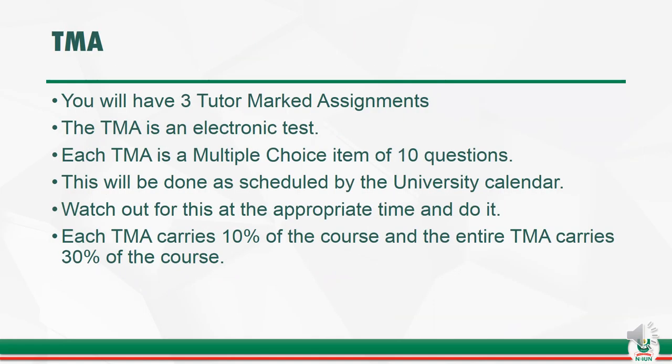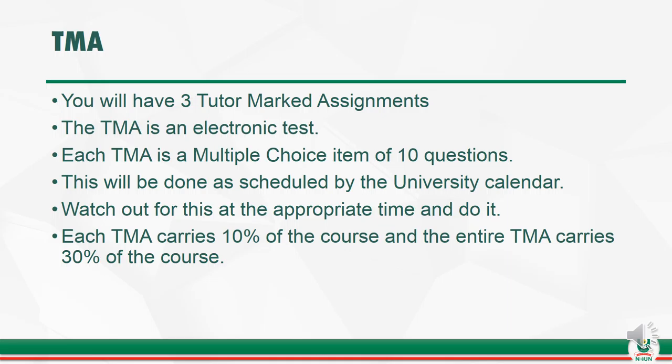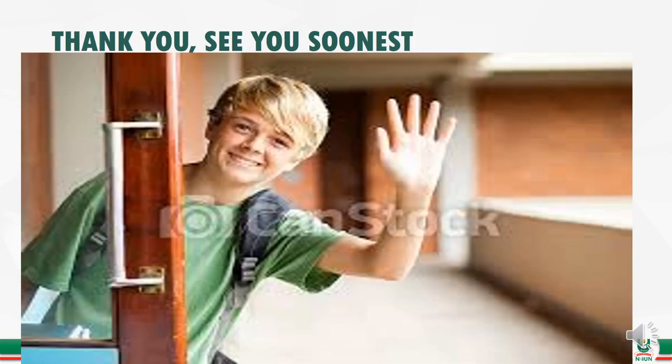Concerning the TMA, you have three tutor-marked assignments. The TMA is an electronic test and each one is a multiple choice item of 10 questions. This will be done as scheduled by the university calendar — watch out for this at the appropriate time. Each TMA carries 10 percent of the course and the entire TMA carries 30 percent of the course. The semester examination will be conducted at your study center. As a two-credit unit course, you will have four questions: a compulsory question of 30 marks and any other two at 20 marks each. The examination carries 70 percent of the course and will run for two hours. That is what we have for the course guide — I wish you well. Thank you, see you.